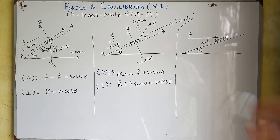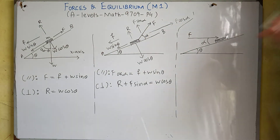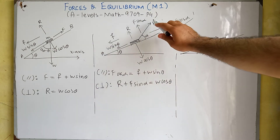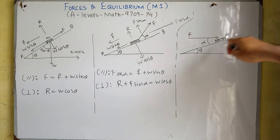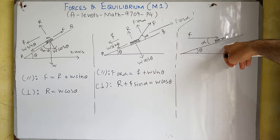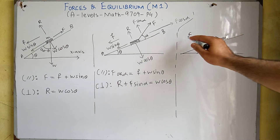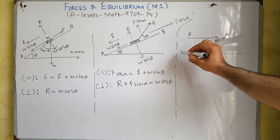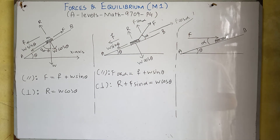In this way, we resolve forces into their components in problems related to forces and equilibrium. Now there is another case: previously we were pulling this body of mass M with force F. In the new case, we are not pulling but pushing this body with force F, where F makes an angle alpha with the horizontal surface AB.